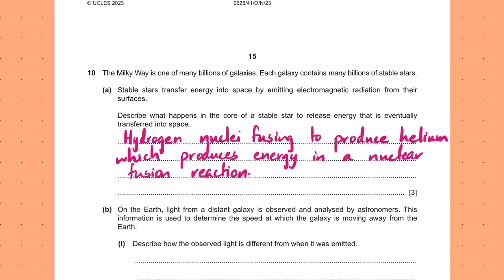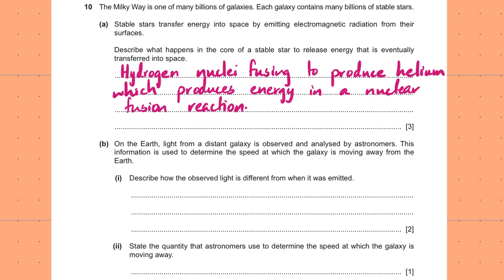Use the words 'hydrogen nuclei fusing into helium' — that gets you two marks — and mention 'nuclear fusion' or 'nuclear reaction' for the third mark. The grading criteria for IGCSE can be a bit unusual in where each mark comes from, but these key terms are essential.